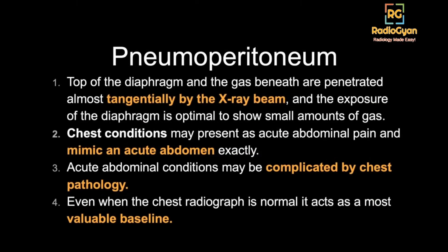The first reason: on an abdominal radiograph, the X-ray beams are divergent in the region of the diaphragm so they don't pass tangentially. But on a chest radiograph, the beams are tangential in the region of the diaphragm and upper abdomen, resulting in better contrast. That is the first reason, as everyone mentioned.